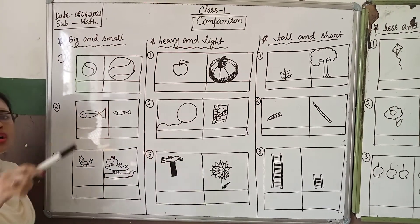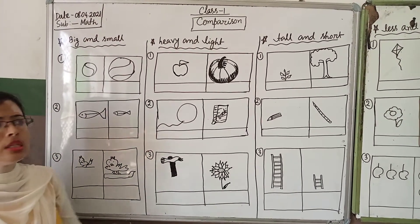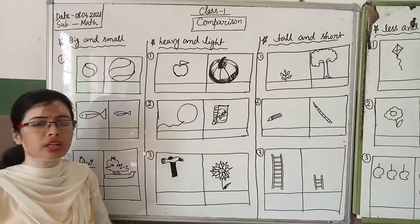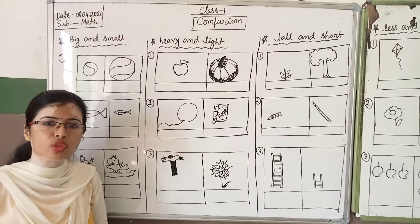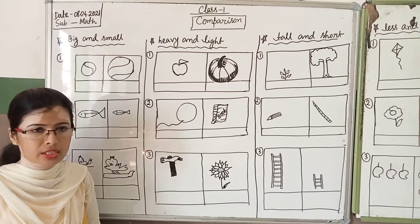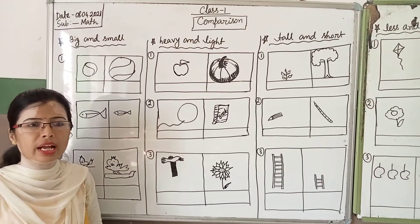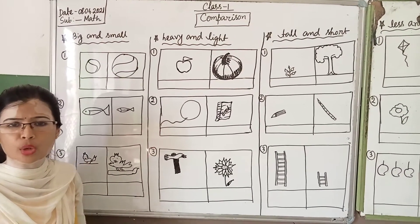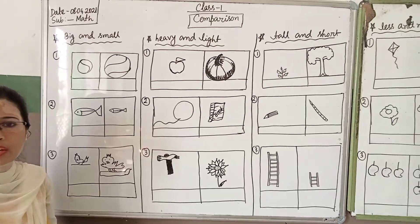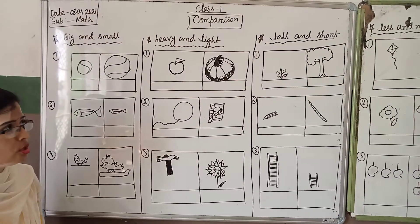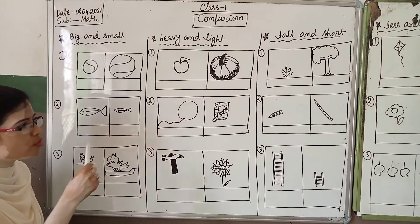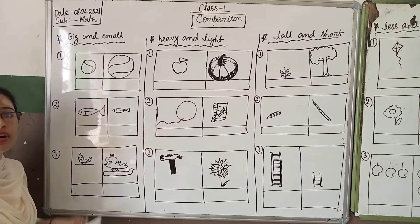So students, we all see around us different types of objects. Some are big, some small, heavy, light — different objects we see everywhere. So here I have found some pictures for explanation.